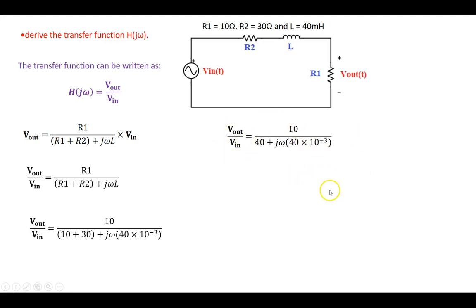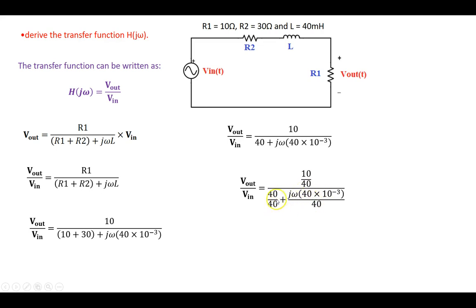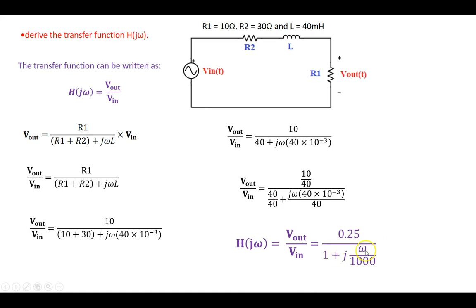To simplify for the Bode plot, I'll divide both numerator and denominator by 40. So 10 over 40 divided by 40 over 40 plus j·omega·L divided by 40. This leads to a transfer function of 0.25 divided by 1 plus j·omega over 1000. The reason for this simplification is that there's a standard 1 over 1 plus j·omega over k form used for Bode plots. So here's our transfer function.